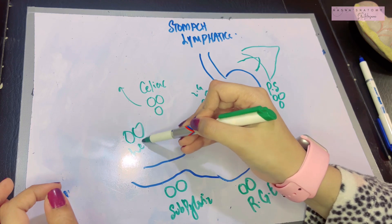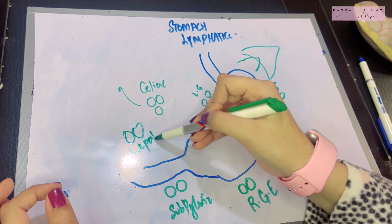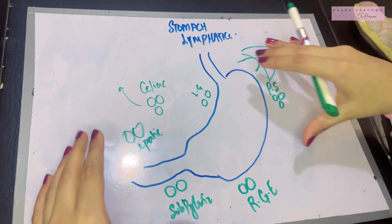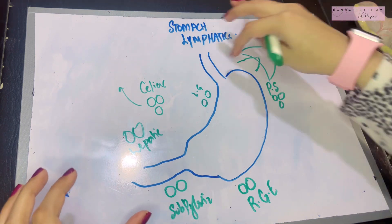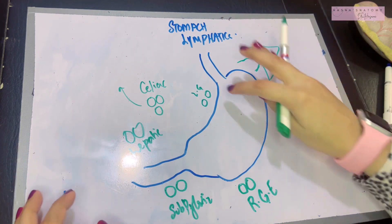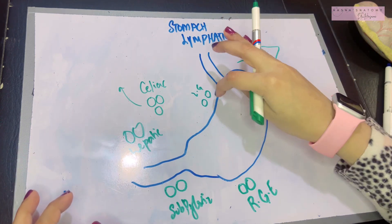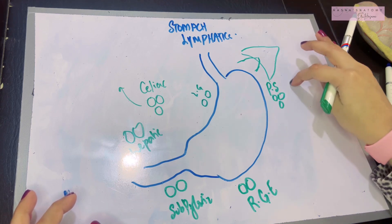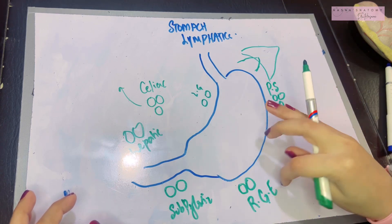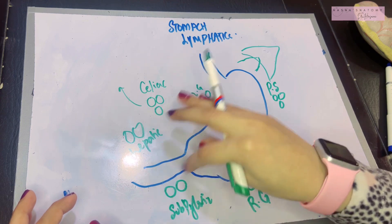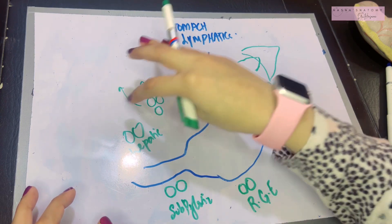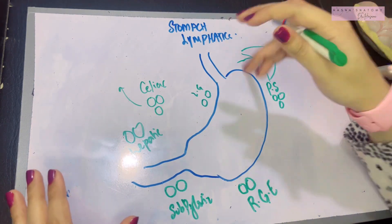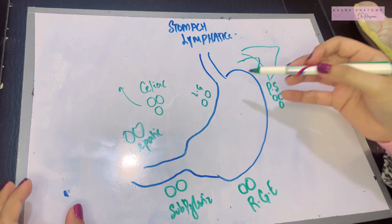There are also nodes of the liver known as the hepatic nodes. So overall, along the lesser curvature — the left gastric nodes; along the greater curvature upper part — the pancreatic splenic; lower part — the right gastroepiploic; beneath the pylorus — the subpyloric; and the hepatic lying close by. Now let's talk about how the lymph is going to drain via these lymph nodes.